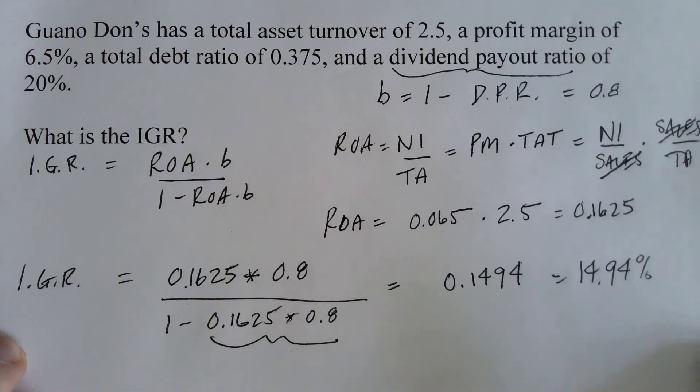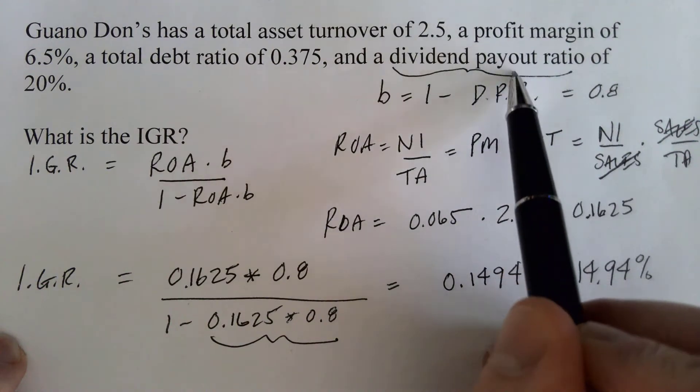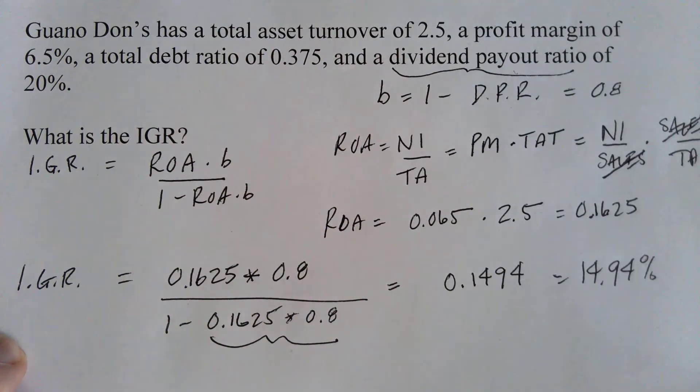Now, by the way, sometimes you are given more information than you need. For example, on this problem, we're given the total debt ratio. And we didn't need that at all. And so students will work and work and work and try to figure out what to do with that total debt ratio when in fact they should just ignore it. It's not needed for this problem. And if you work the problem in the way that I'm telling you to, you won't get tripped up by unnecessary information. So start here and then work your way back, looking through the things you have to find the things you need.